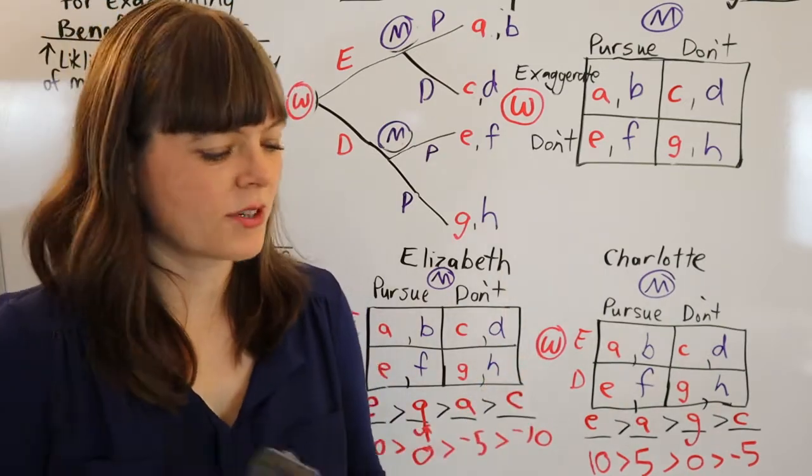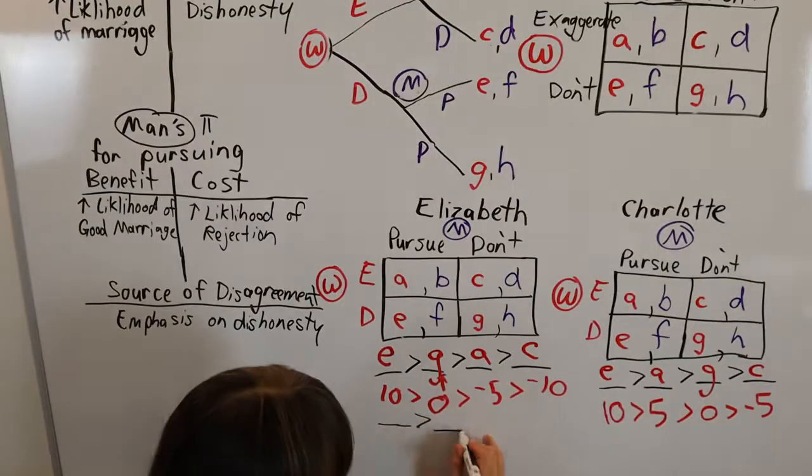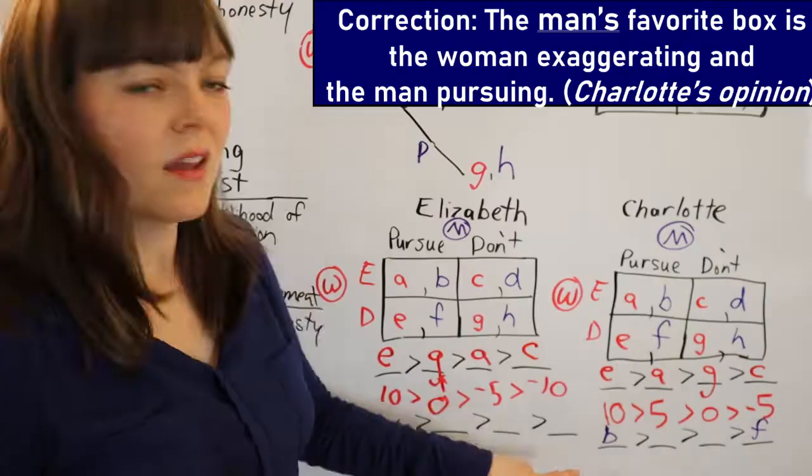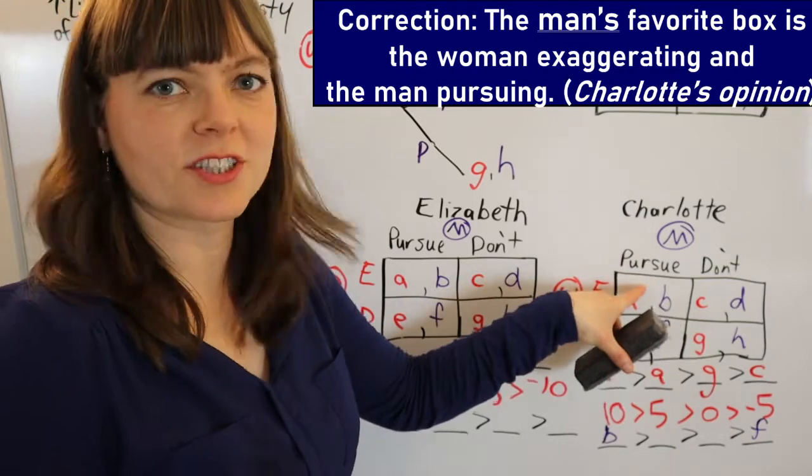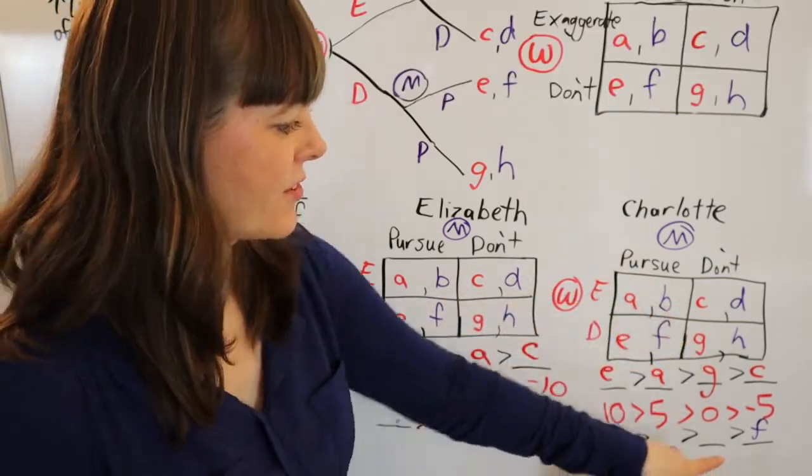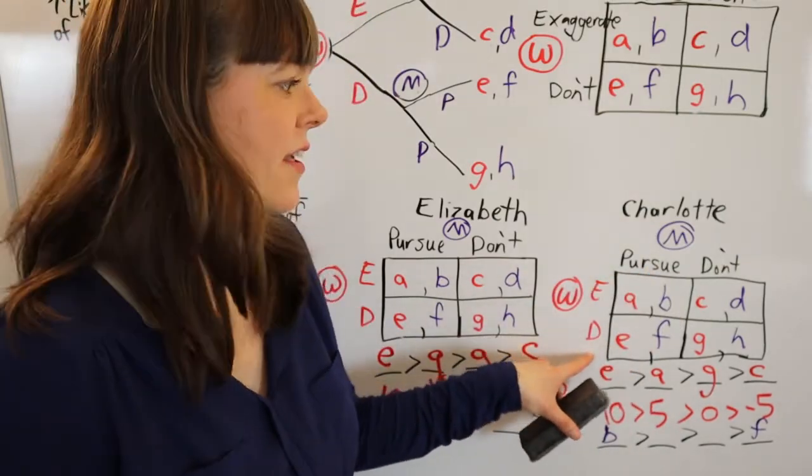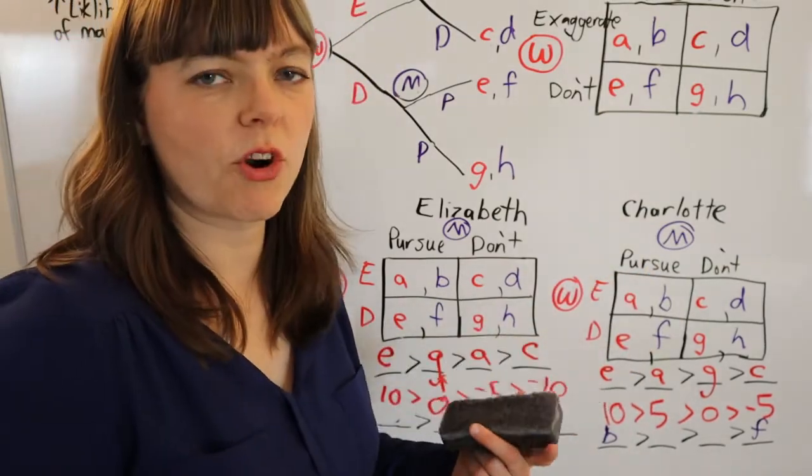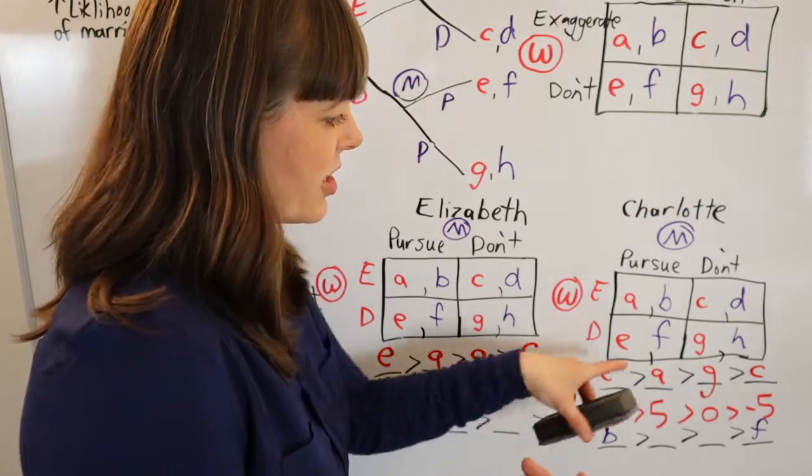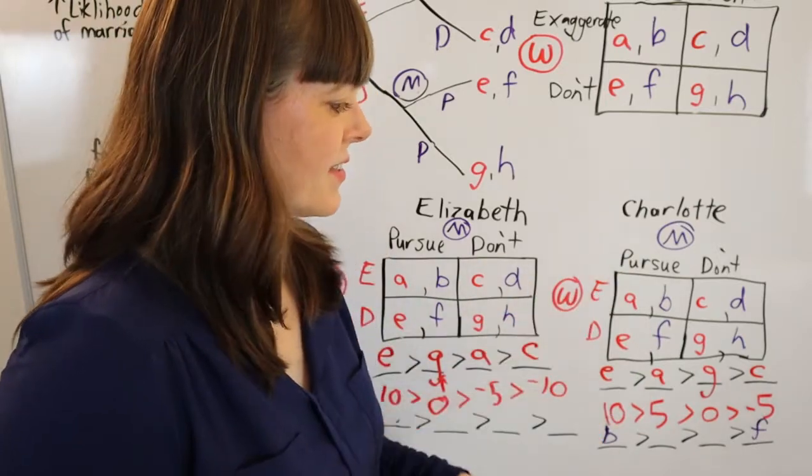Now for Charlotte, I put her favorite box up here, which is where he pursues and she's exaggerating. And I put her least favorite box as him pursuing and her not exaggerating, because I think she's very worried that the man is going to fear rejection. And even though he's pursuing here, we don't know whether that pursuit is going to be successful. And now between these two, he obviously prefers the box where she exaggerates.